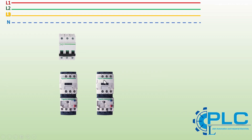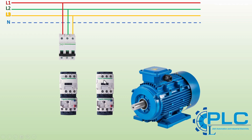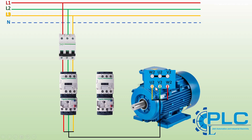Let's start with the power circuit wiring. First, I connect the three-phase power supply to the input terminals of the first contactor. Then I connect the output of the first contactor to the motor terminals. Now, for the second contactor, we need to swap two of the phase wires — for example, we can swap phase two and phase three. It doesn't matter which two phases you swap, and you can do this on either the input or output side of the second contactor.